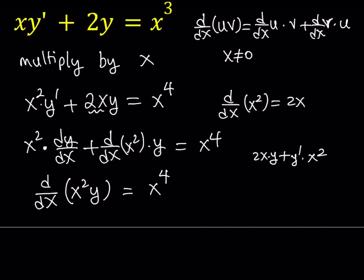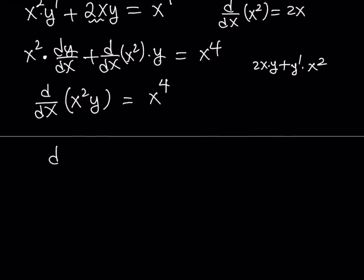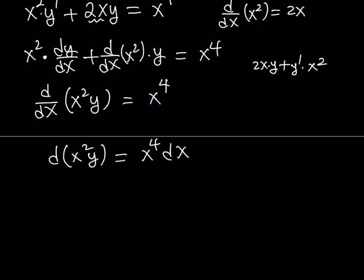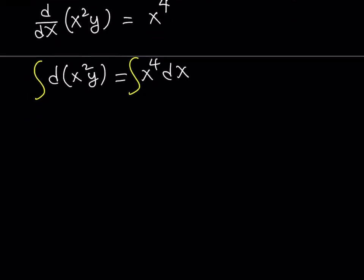So from this, we are going to be solving for y. Let's multiply both sides by dx. That gives us d of x squared y equals x to the fourth dx. We have differentials on both sides, which is good because we are about to integrate. Let's integrate both sides with respect to x. Since y is a function of x, x squared y is also a function of x, so both sides are integrated with respect to x.